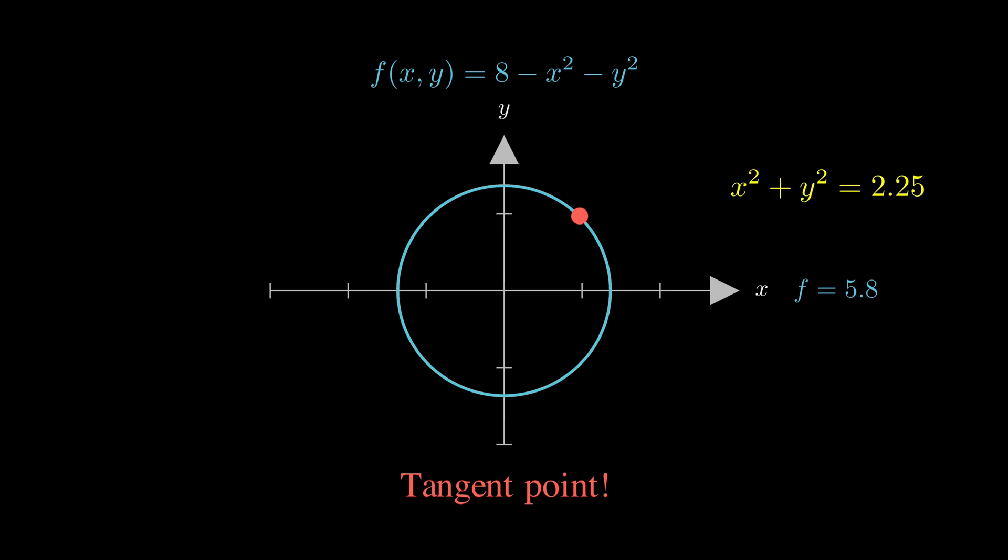And here's the key insight that makes Lagrange multipliers work. At this tangent point, look at the gradient of our function f, shown in blue, and the gradient of our constraint function, g shown in yellow. They're pointing in exactly the same direction. When the gradients become parallel, like this, we know we've found our optimum.